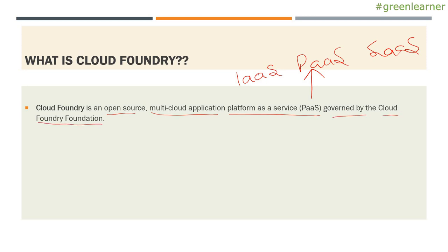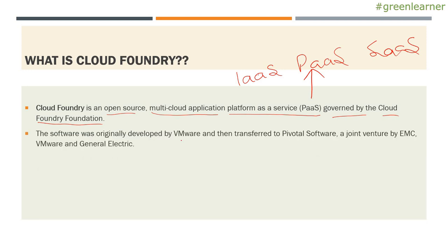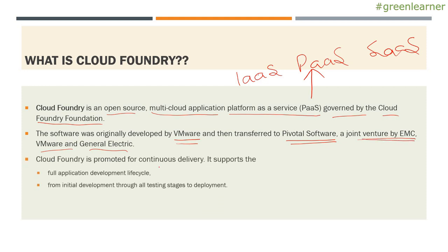This foundation is a group of very popular companies which are behind the Cloud Foundry. The software was originally developed by VMware, and then transferred to Pivotal Software. This is another company — a joint venture by EMC, VMware, and General Electric. Pivotal Software is a joint venture started by this group of companies.